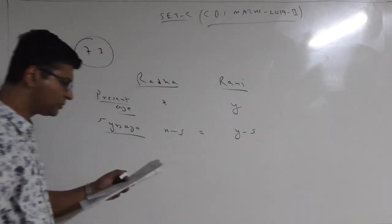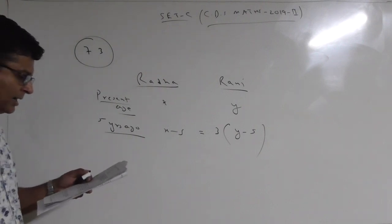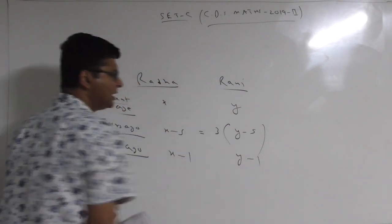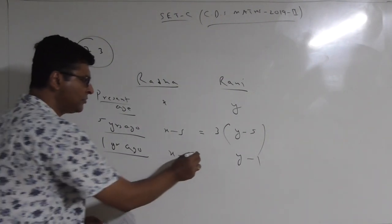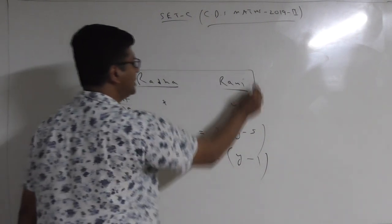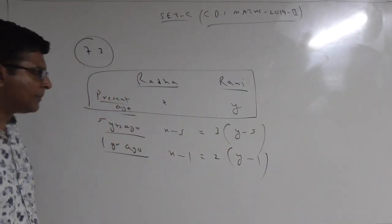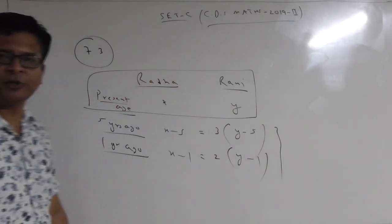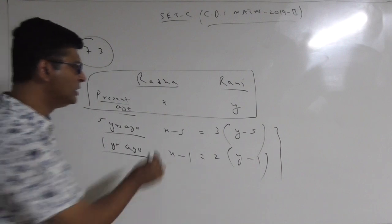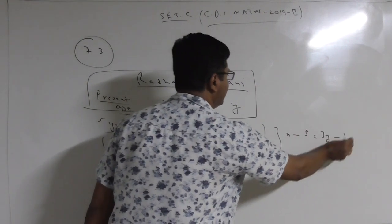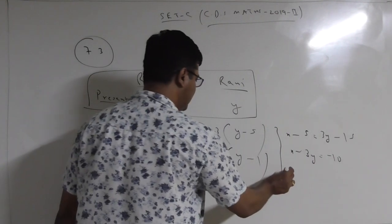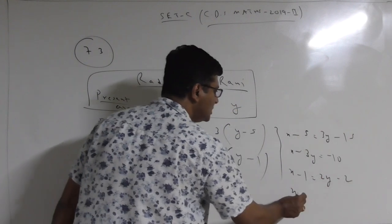One year back, Radha's age is 2 times Rani's age. You have to find the age difference between their present ages. Simplifying the two equations into linear equations: 5 years back: (X-5) = 3(Y-5), which gives X - 3Y = -10. One year back: (X-1) = 2(Y-1), which gives X - 2Y = -1.